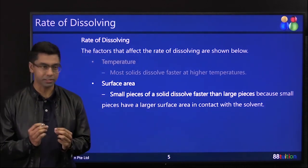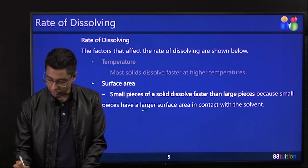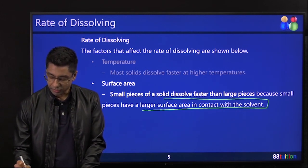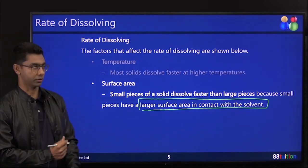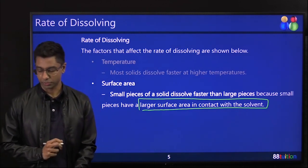Surface area: small pieces of solid dissolve faster than large pieces because small pieces have a larger surface area in contact with the solvent. Please, please need to say this if people ask you, or in the question they ask you.